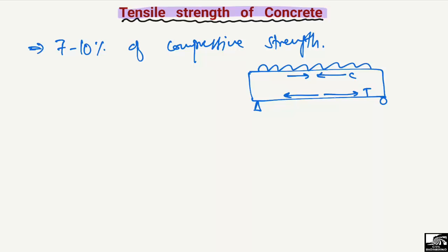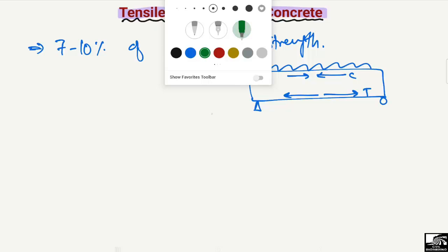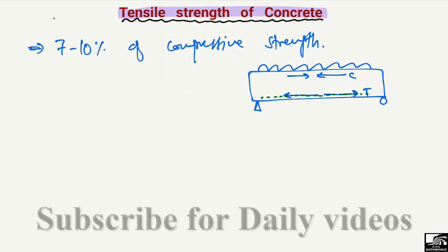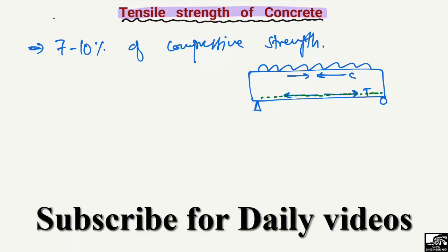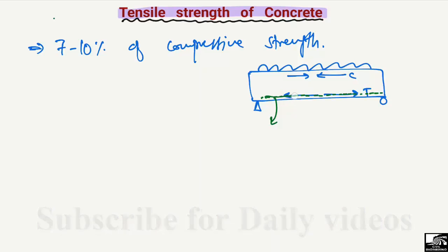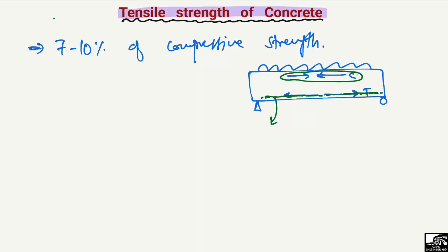The bottom portion of the beam is subjected to tension, and we know that concrete is weak in tension. So we place reinforcement at the bottom portion of the beam to carry the tensile stresses. This is the main reason we provide steel bars — to enhance the tensile capacity of the beam. At the top, the concrete is in compression, and since concrete is strong in compression, we do not need to provide steel bars on the top of the beam section.